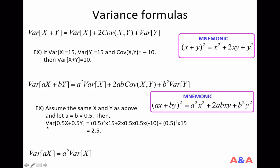Let's say a and b are both 0.5. Then what is the variance of 0.5x plus 0.5y? According to this formula: a is 0.5, variance of x is 15, a is 0.5, b is 0.5, covariance is minus 10, b is 0.5, variance of y is 15. So this is equal to 2.5.